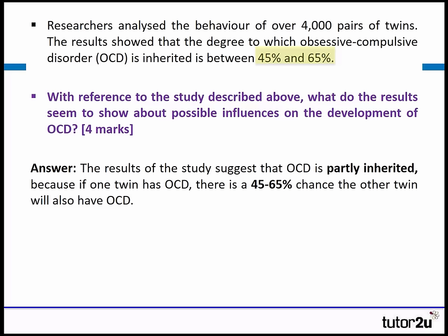The results seem to suggest that OCD is partly inherited — it's really important you put in that word 'partly.' Because if one twin has OCD there's only a 45 to 65% chance the other twin will also have OCD. If you said OCD is inherited you'd be wrong — it's partly inherited.